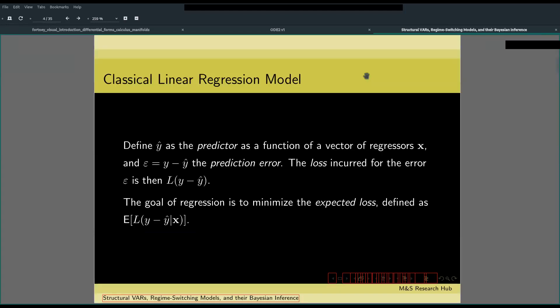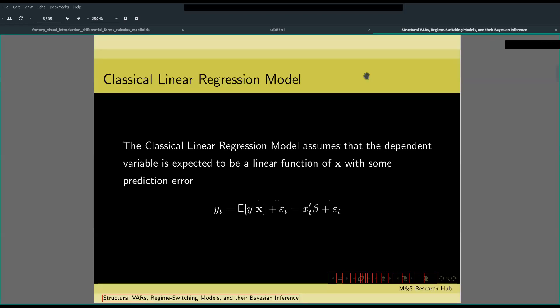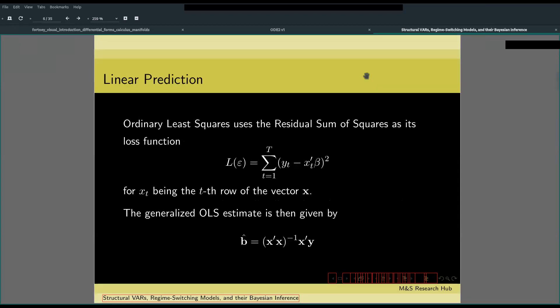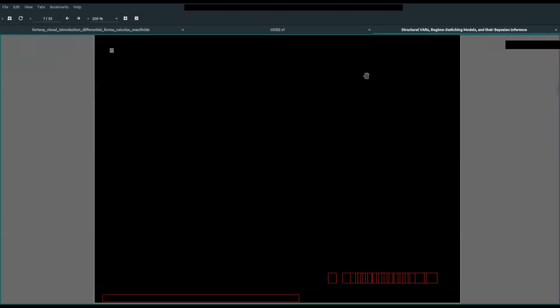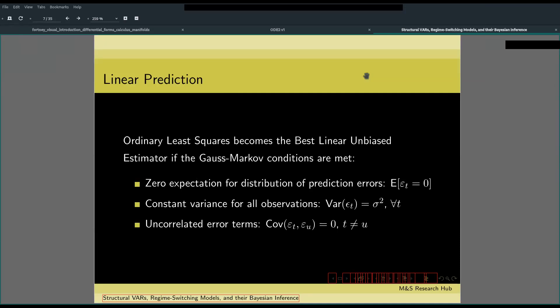Let's begin with a review of our classical linear regression model. In linear regression, our goal is to minimize the prediction error given by the difference of the true value of the dependent variable and our estimate. The loss function we shall use here is the quadratic loss function, and we have our generalized OLS estimate. As we know from basic econometrics, ordinary least squares becomes the best linear unbiased estimator if the Gauss-Markov conditions are met. This also implies that our sample must take a normal distribution.